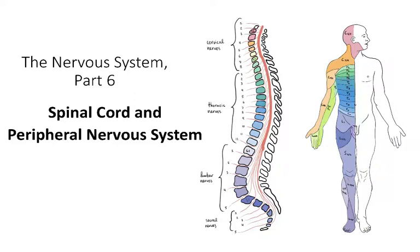Welcome to part six of our lectures on the nervous system. In this video we're going to talk about the spinal cord structure and function, and then a little bit about the peripheral nervous system with a focus on the somatic peripheral nervous system.